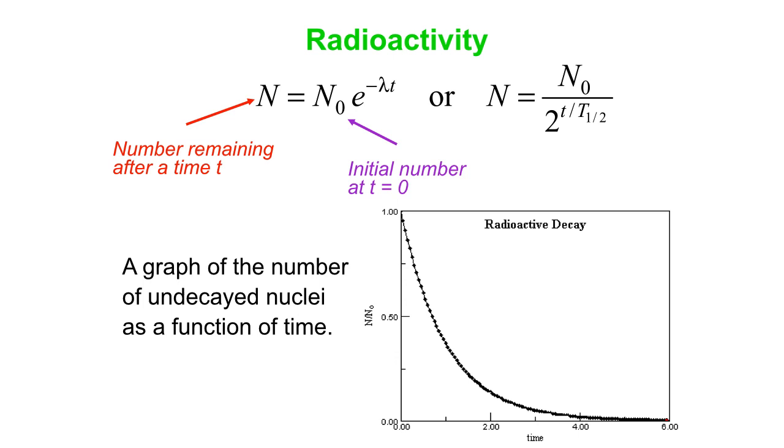So there's one way to write it. You can also write it in this form: n is n0 over 2 to the time over the half-life. So in fact, that really means 2 to the number of half-lives have gone by. So if t happens to be 3 half-lives, then you get 3 half-lives over a half-life, that's just 3. You get 2 cubed. So it's n is n0 over 8 in that case.